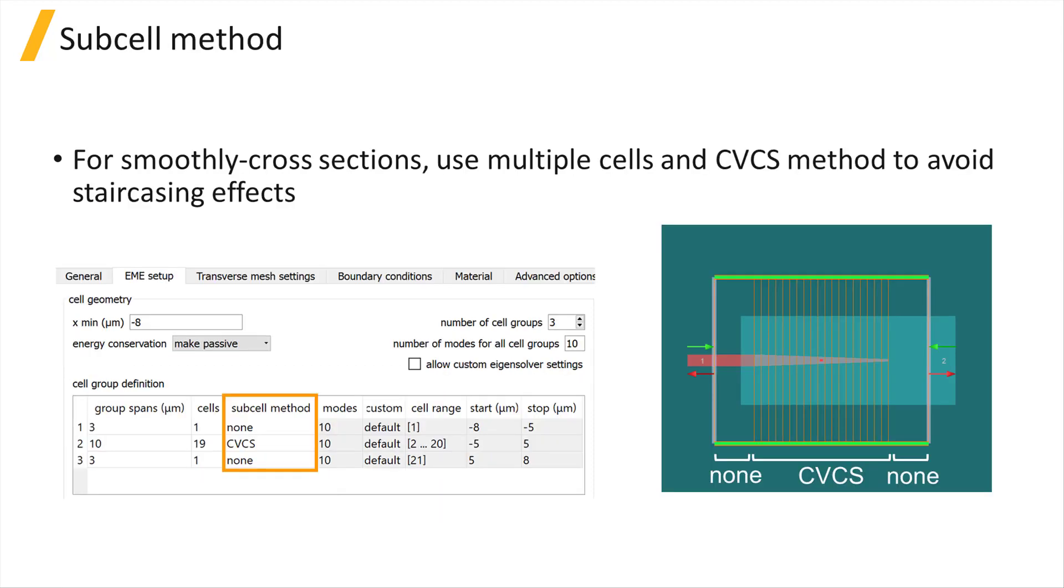When the structure cross section is smoothly varying, use multiple cells and the CVCS subcell method to avoid staircasing effects, like the mode converter example from earlier.